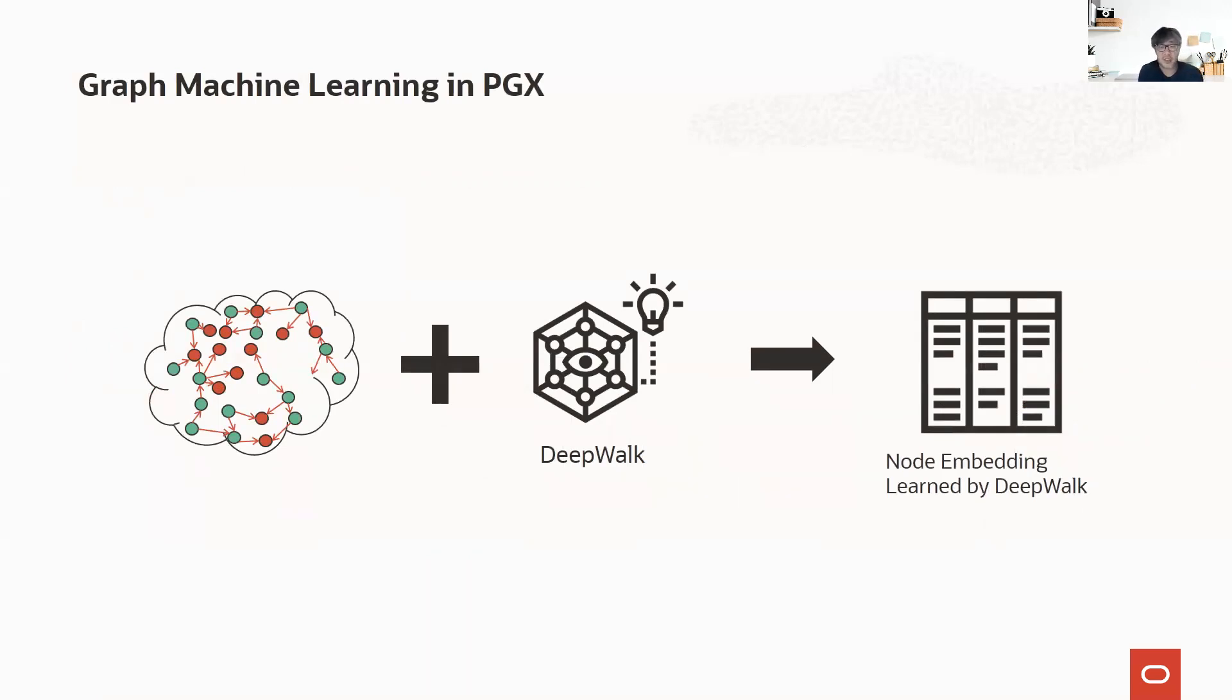DeepWalk is the seminal work in modern graph machine learning. It learns the node embedding from the graph topology so that you can include the linked information in your machine learning model. As it only considers the graph topology, it is highly recommended to combine the node entity features with the deep learning model. In addition, as DeepWalk is a transductive model, you cannot get embedding of unseen nodes.